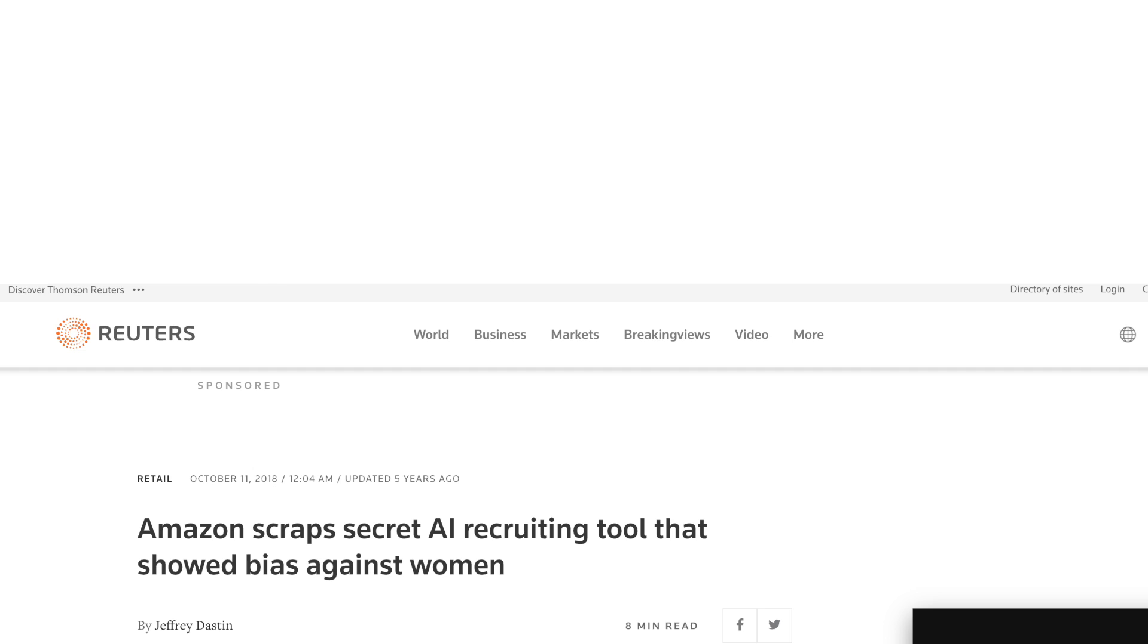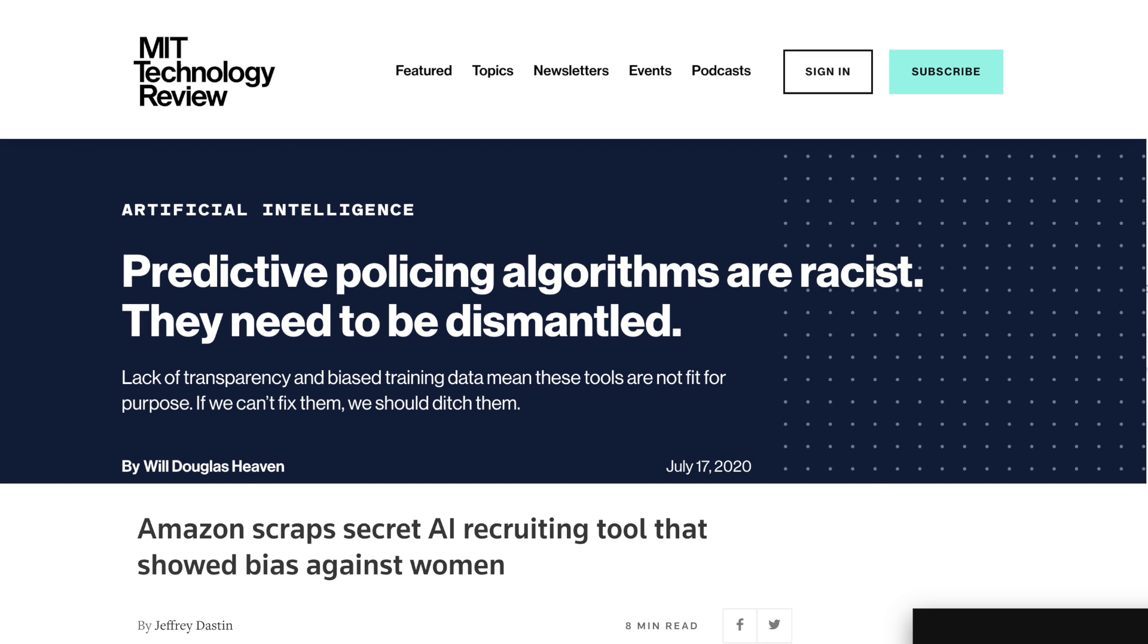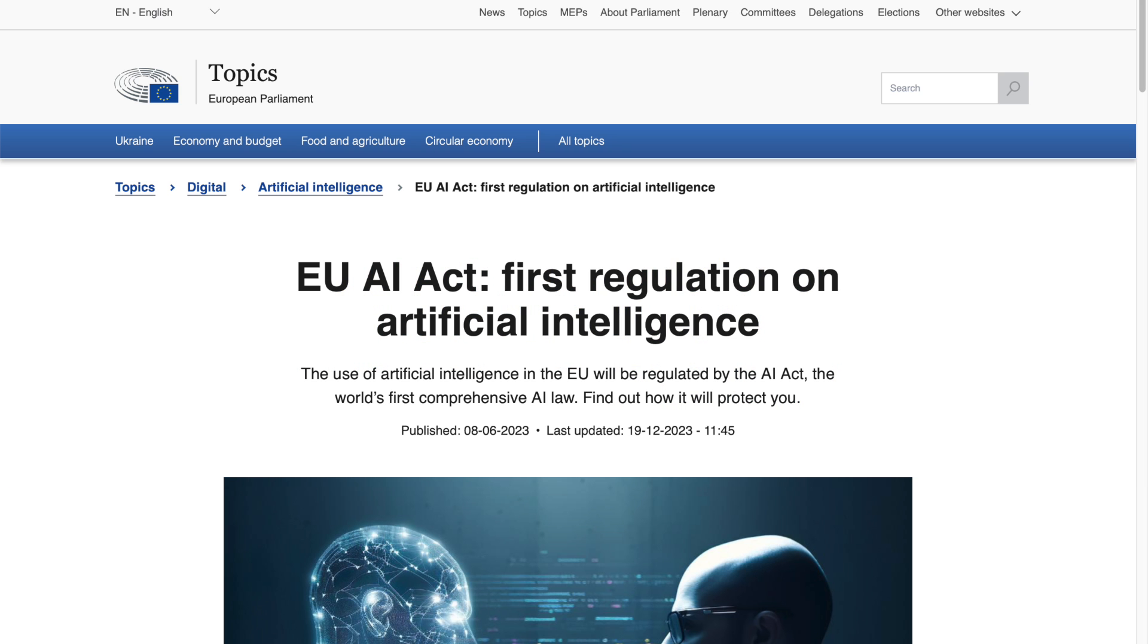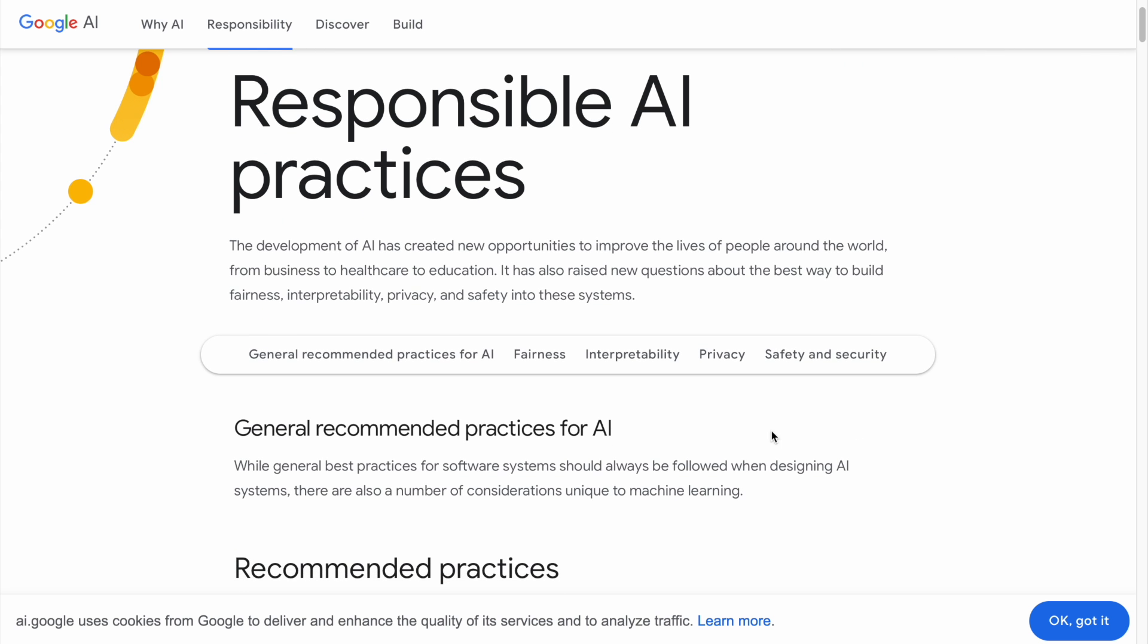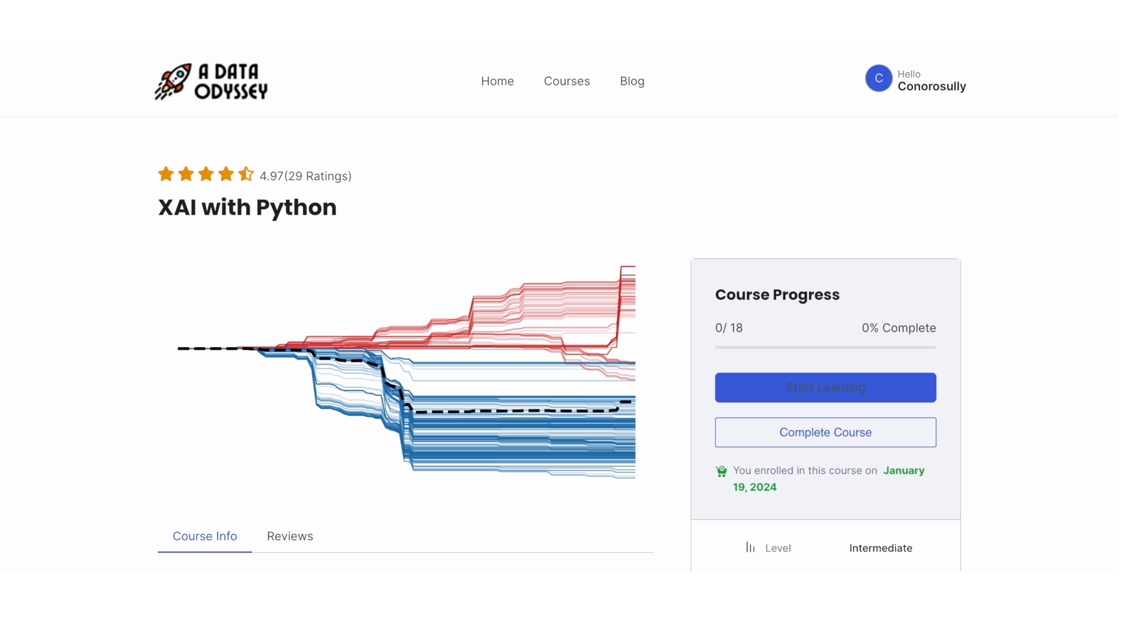With shifting public sentiment and movements to regulate AI, like the EU AI Act, factors in machine learning like interpretability, safety, fairness, and transparency will become more important in the future. The course gives you the tools to help stay ahead of this trend.